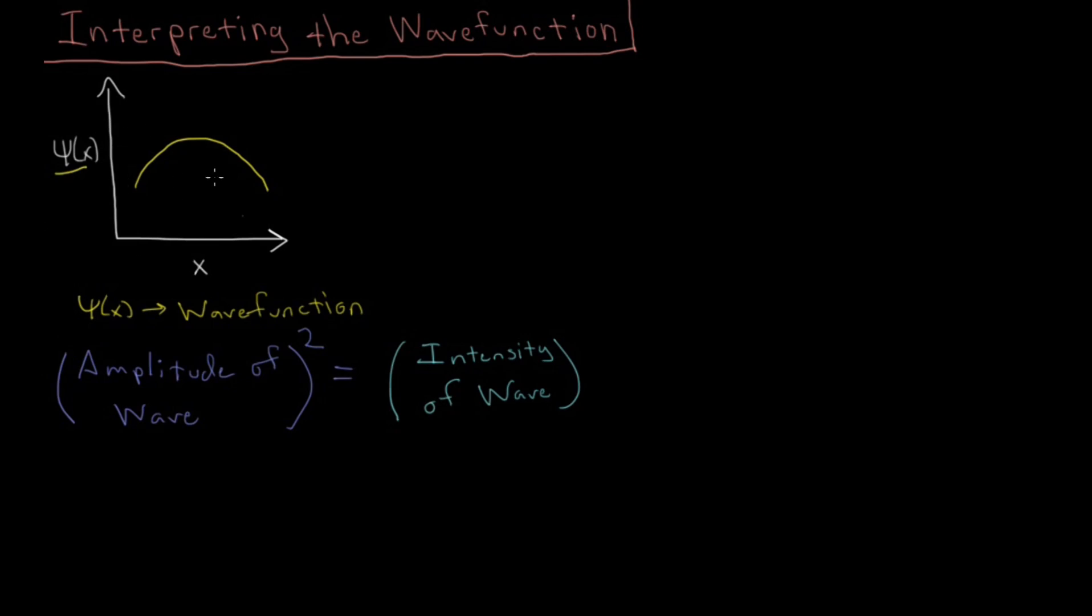Now, normally we would just square the function, because this wave function here is just some function of x, but we have this special caveat that the wave function is complex. That is, it's not necessarily real. It can include a part which is imaginary.